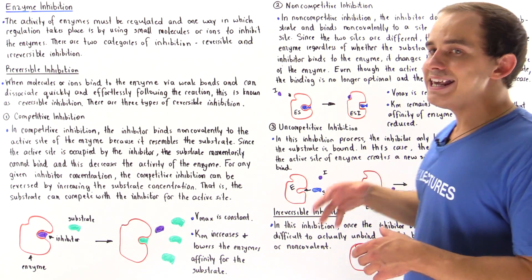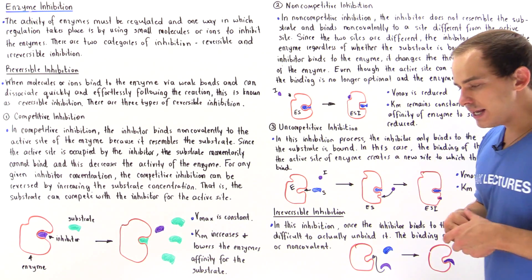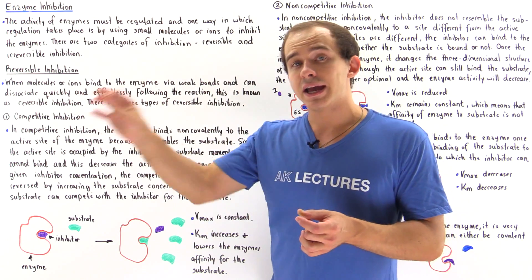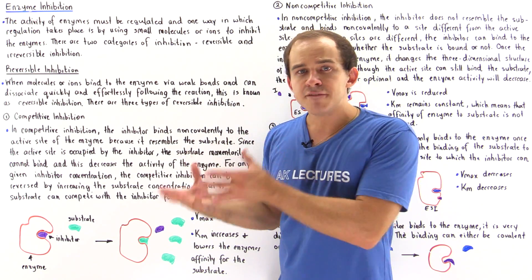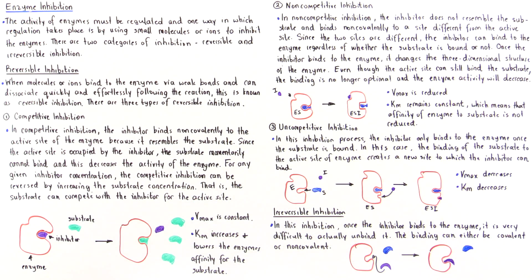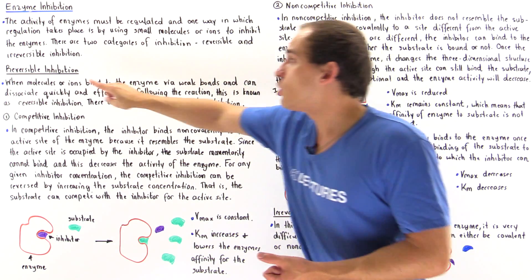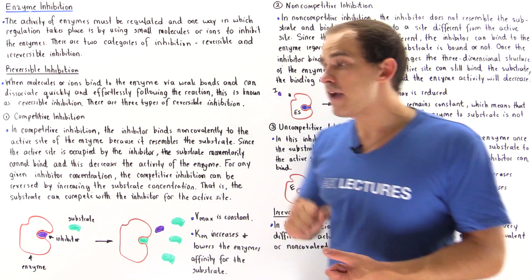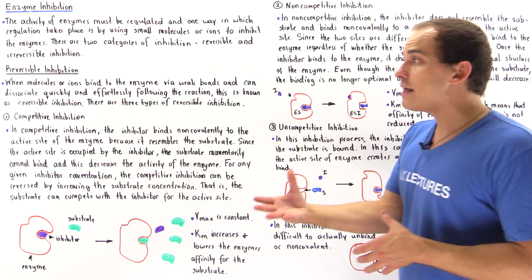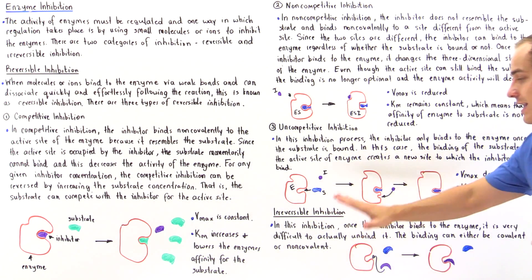Now, what exactly is irreversible inhibition? We have reversible and irreversible. Irreversible inhibition basically means that once the inhibitor binds to our enzyme, it will be extremely difficult to actually unbind that enzyme-inhibitor complex. The binding can either be covalent or non-covalent. All three types of reversible inhibition processes are non-covalent, but irreversible inhibition can be non-covalent as well as covalent. Whenever you hear covalent bonding, that usually means irreversible inhibition.